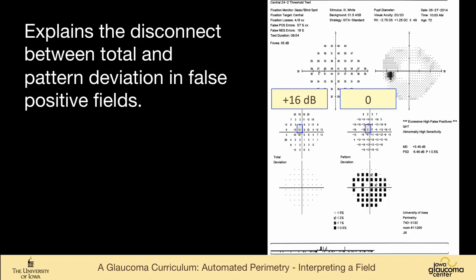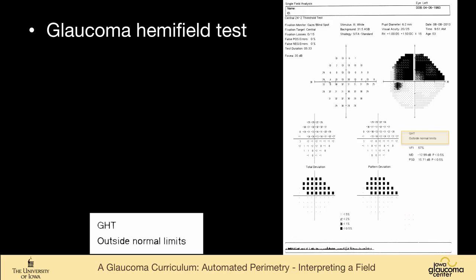And this explains that disconnect that we see in false positives because now the seventh most sensitive point set at zero is actually 16 decibels above normal for age. So anything that doesn't make that ridiculously high cut is considered to be depressed for pattern deviation. And again, you see this white area here that should always make you think of false positivity, 57% false positives, and this disconnect, normal total deviation, abnormal pattern deviation.